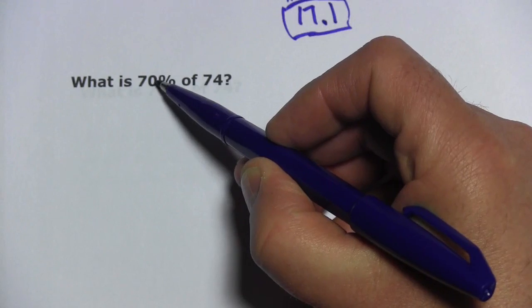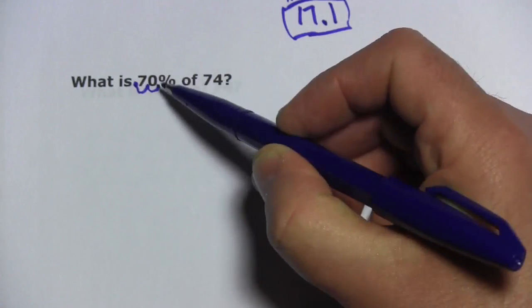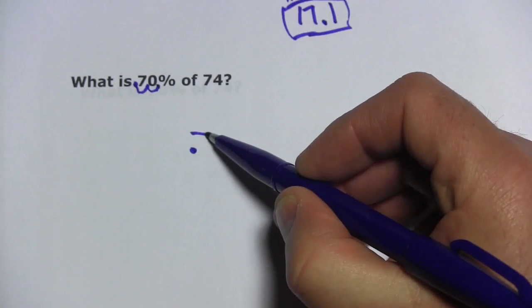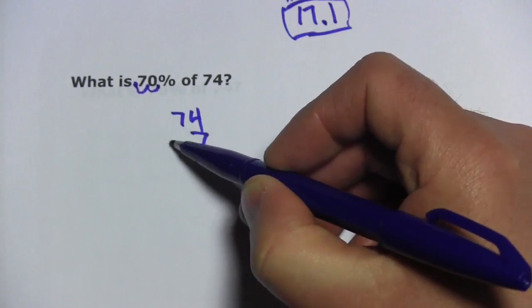Remember to convert a percent to a decimal, you move the decimal point two places to the left. So, 70% is 0.7. And then we multiply this by 74. So, I'll set it up like this.